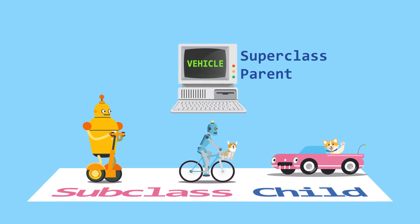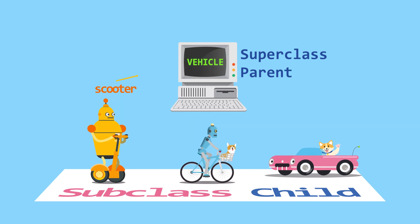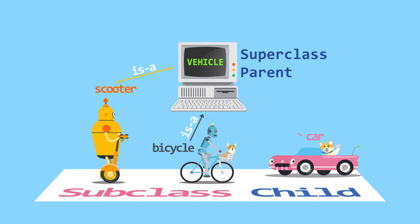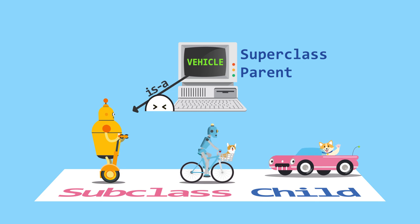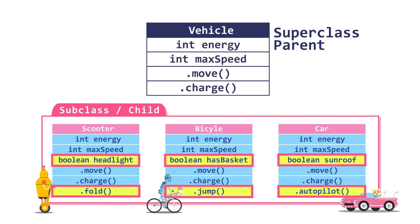This relationship is also called the ISA relationship. Scooter is a vehicle. Bicycle is a vehicle. And car is also a vehicle. However, the other way around is false. Vehicle is a scooter? That isn't always true — a vehicle is not necessarily always a scooter. Children classes inherit the properties of the parent class, and they can even do more.